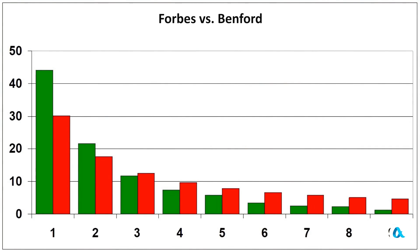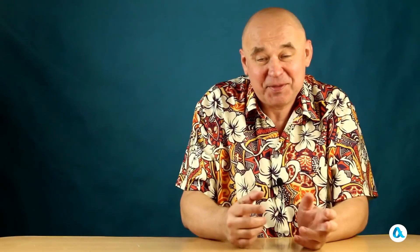And now it's time for our traditional final question. Inspired by Alexei's presentation, I'm going to conduct an audit. I'll take the list of all Forbes billionaires and check it for compliance with Benford's law. The distribution of the first digits within the Forbes list is shown in green, while Benford's law distribution is shown in red. There are far more billionaires with ones and twos as the first digit than there should be, but for threes, fours, and all the way up to nines, there are very few compared to Benford's law. So what's going on here? Share your thoughts in the comments.